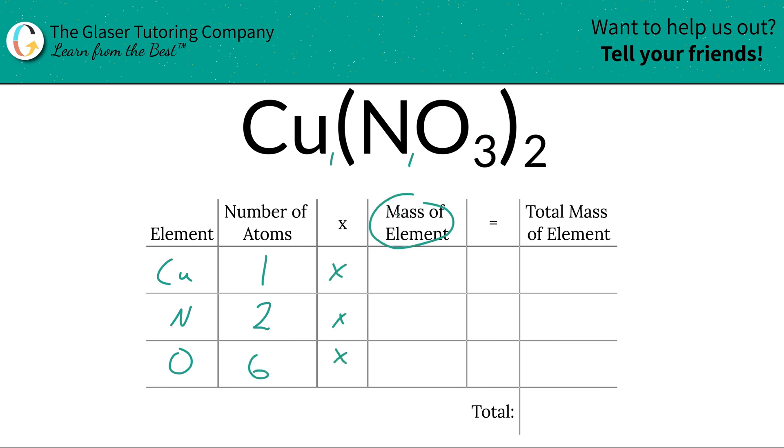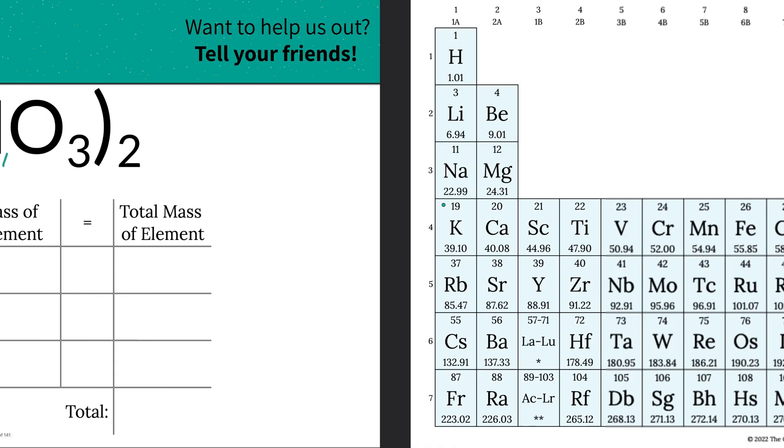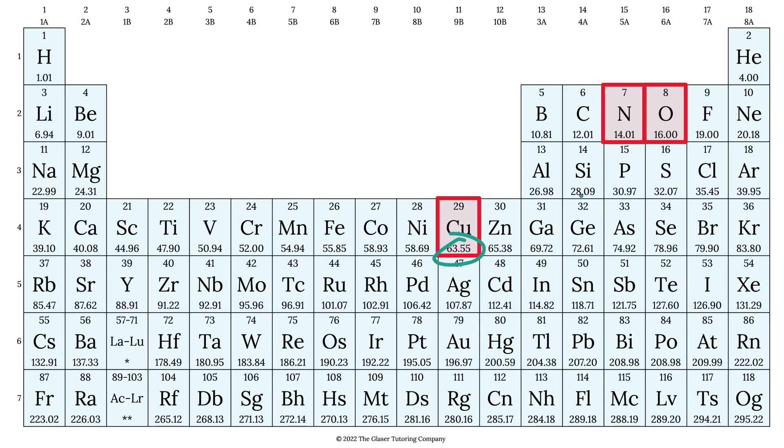Next is then to identify the mass of each element, and that's where the periodic table comes into play. So copper here has a mass of 63.55, nitrogen is 14.01, and oxygen is 16. Those masses are in grams per mole or AMU. It actually does not matter, the magnitudes stay the same.